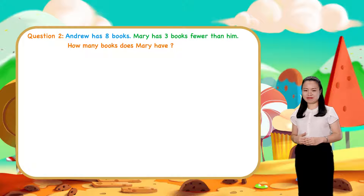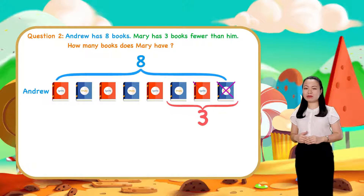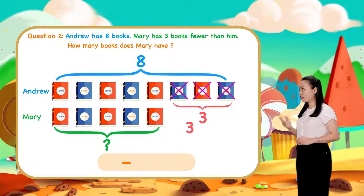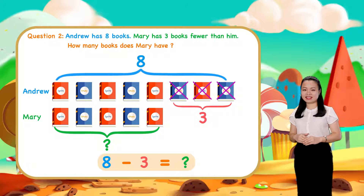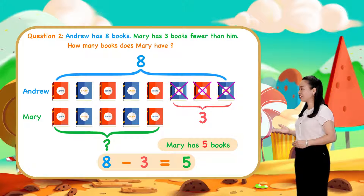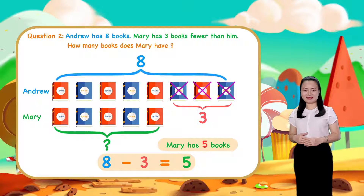Let's find the answer together. Andrew has 8 books. Mary has 3 books fewer than him. So Mary has the number of books that is 3 fewer than 8. We subtract 3 from 8 to find the number of books Mary has. So, 8 minus 3 equals 5. We conclude, Mary has 5 books. As you can see from question 2, we subtract to find 'fewer than'.